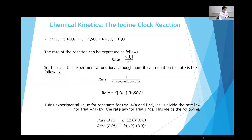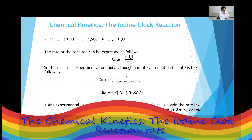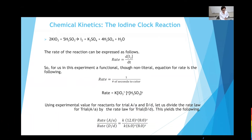Experiment two is about chemical kinetics. Chemical kinetics is the study of how fast a reaction can take place — determined based on the rate at which a product is formed or a reactant is consumed.